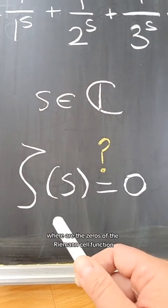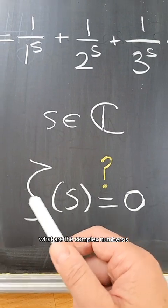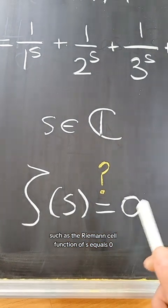where are the zeros of the Riemann zeta function? What are the complex numbers s such that the Riemann zeta function of s equals zero?